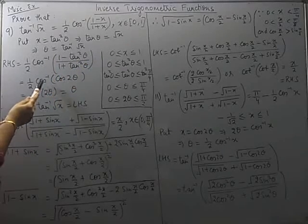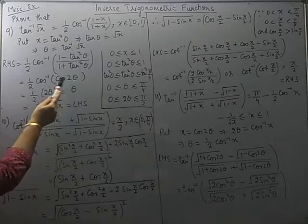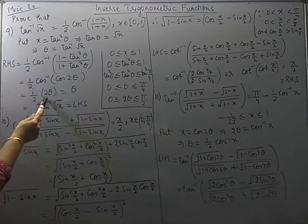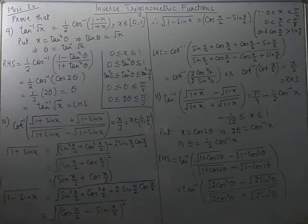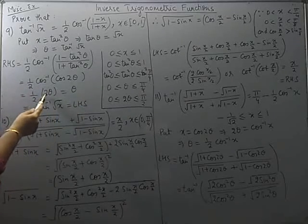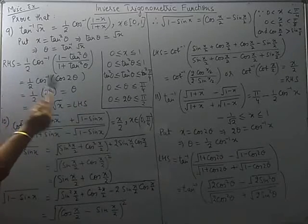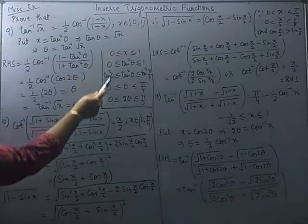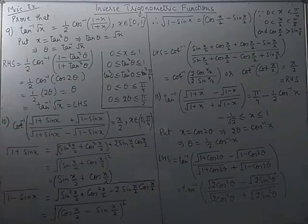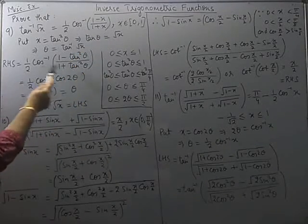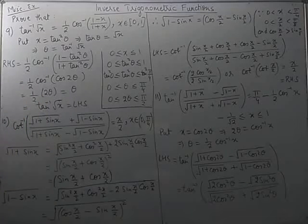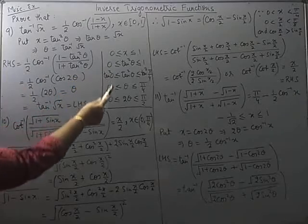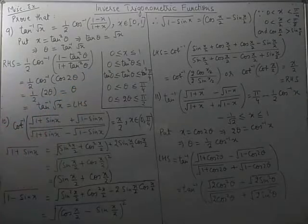Now, can we replace cos inverse(cos 2θ) by 2θ? That can be justified from the domain. As I told you earlier, you can write it directly because every time the domain given to you will support your step and you will find the angle belongs to the required principal branch. But still let us go through the explanation here.